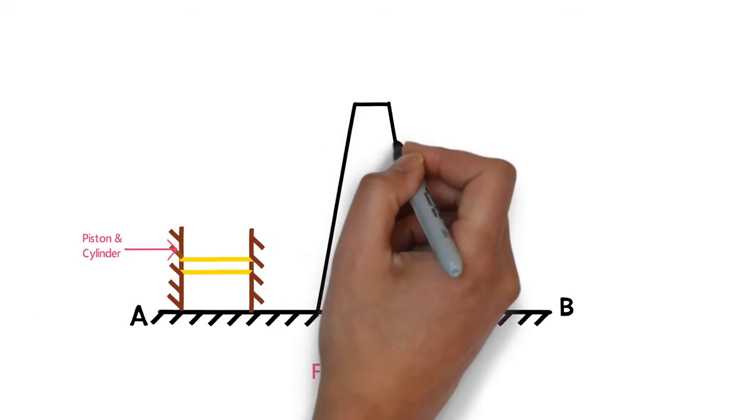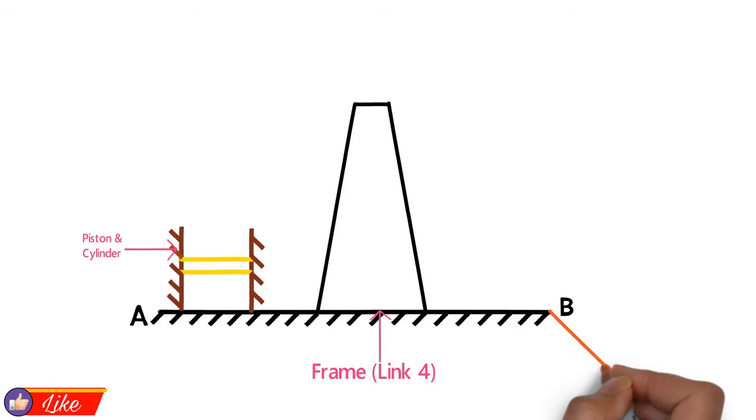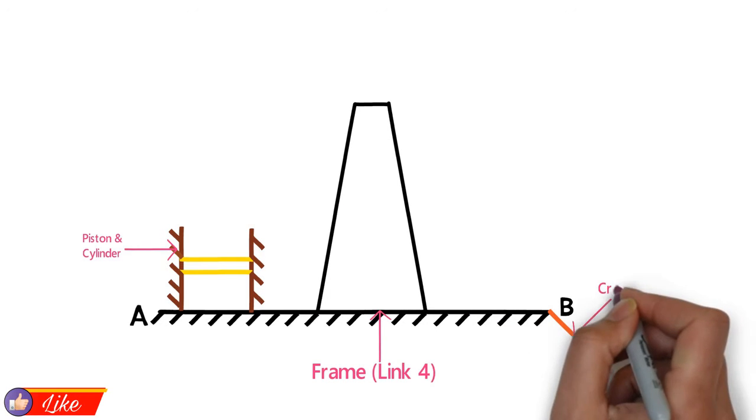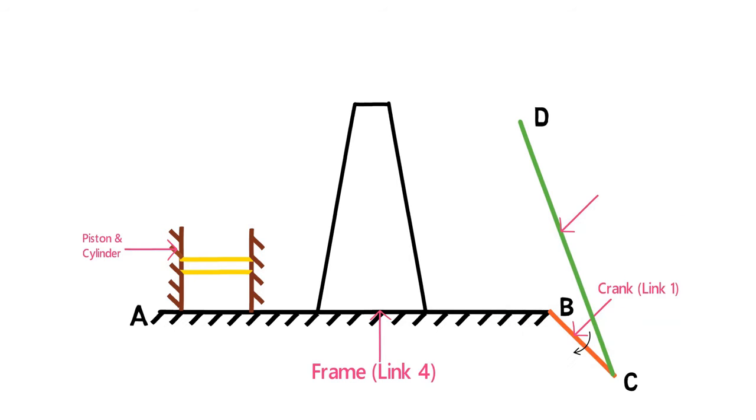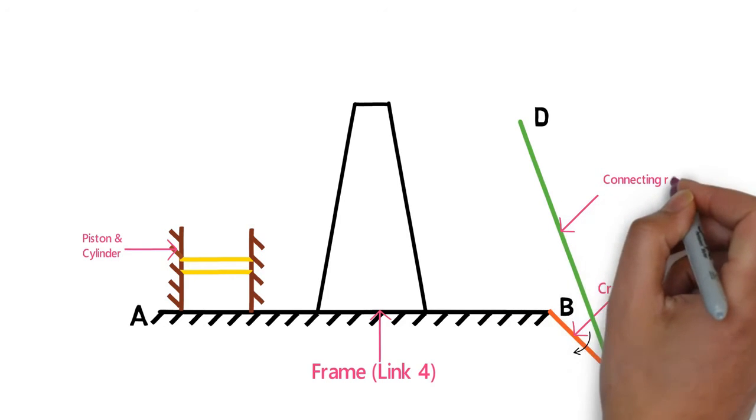Link number 1, that is crank, has rotary motion and it rotates about point B. At point C, connecting rod CD is provided. Consider this is link number 2.